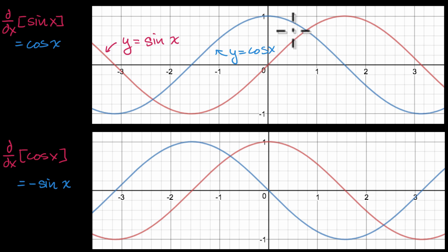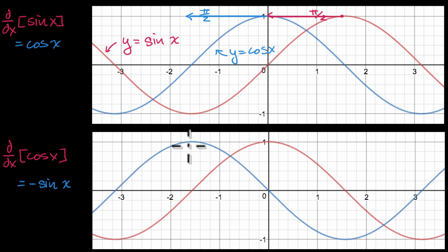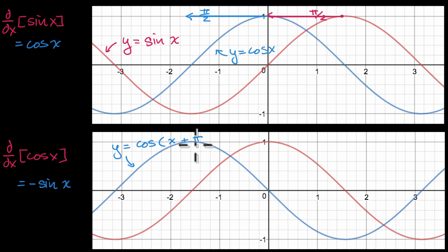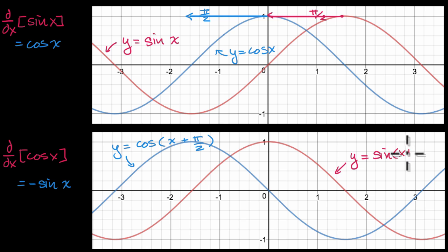Now what I'm going to do next is shift both of these graphs to the left by pi over two. I'm going to shift the red graph and also the blue graph to the left by pi over two.